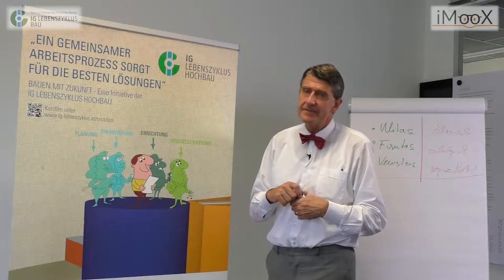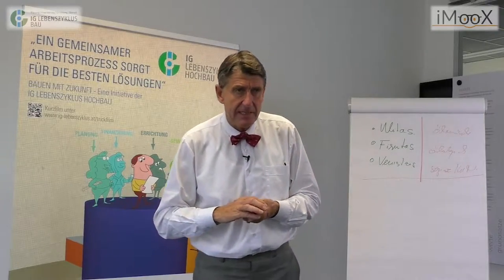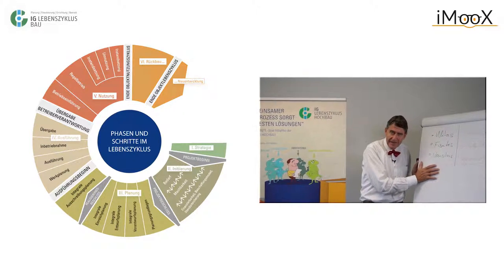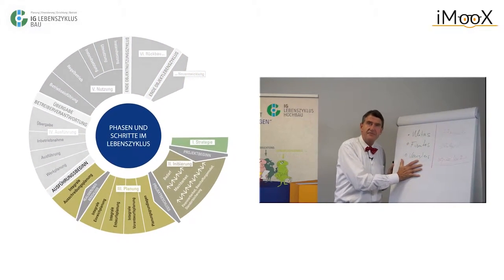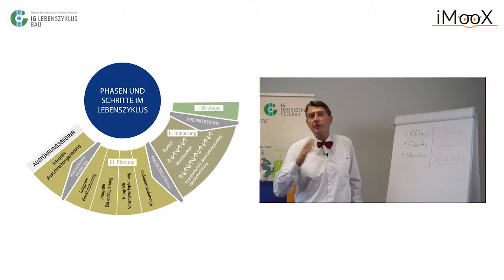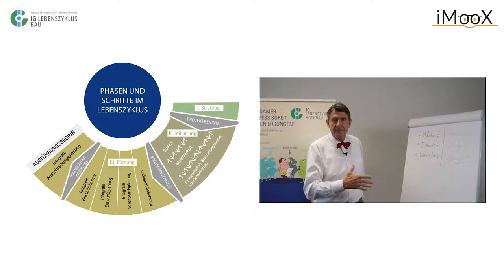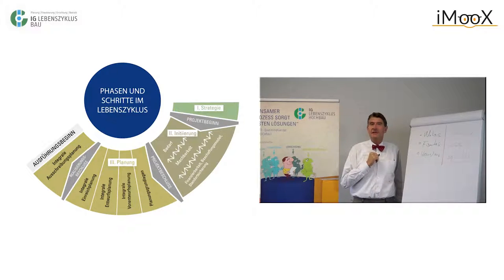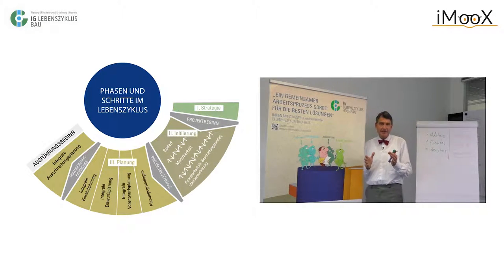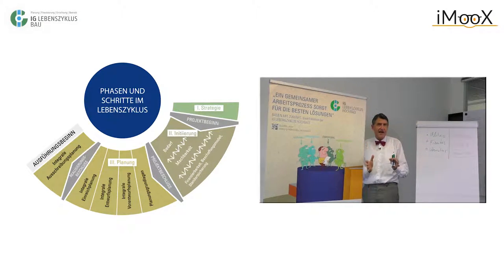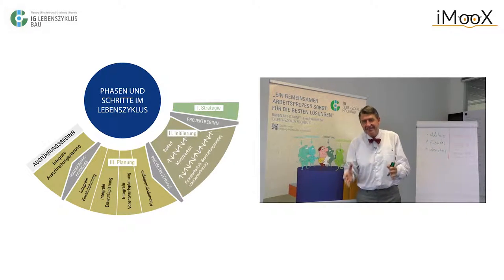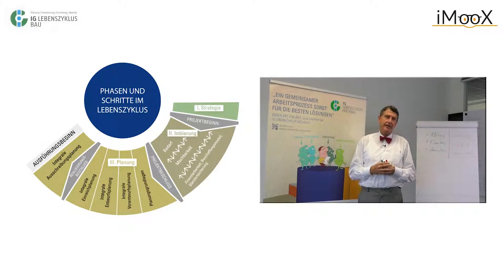Lassen Sie mich zum Abschluss noch eins sagen. Das beste integrale Planungsteam ist verloren, wenn nicht die zwei vorhergehenden Phasen – die Strategiephase und die Initiierungsphase – so präzise abgeschlossen sind, dass der Auftraggeber, der Bauherr, genau definiert, was er haben will – ohne dabei schon an den Bau zu denken. Wir nennen das Bestellqualität. Und jedes integrale Planungsteam ist gut beraten, als erste Frage nach Erteilung des Auftrags den Auftraggeber nach einer präzisen Bestellqualität seines zukünftigen Hauses zu fragen.